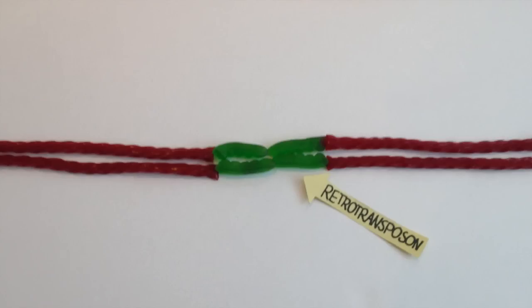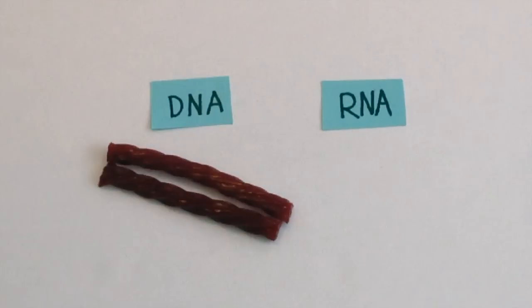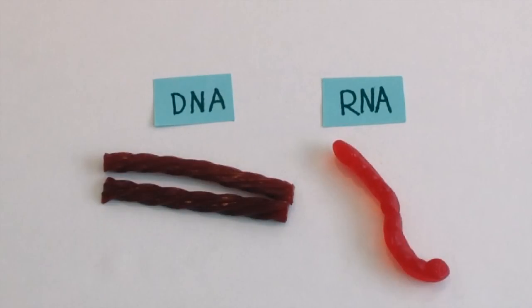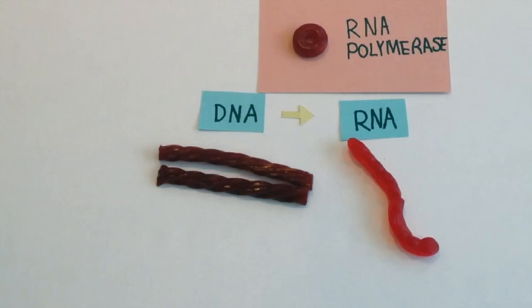Retrotransposons are transposable elements that move via the copy and paste method. First, the retrotransposon gets itself copied. There are two genetic languages, DNA and RNA. You can think of DNA as the main blueprint of life, while RNA is the messenger of life, carrying the blueprint to other parts of the cell. The retrotransposon gets the help of the enzyme RNA polymerase to be transcribed or copied into RNA.